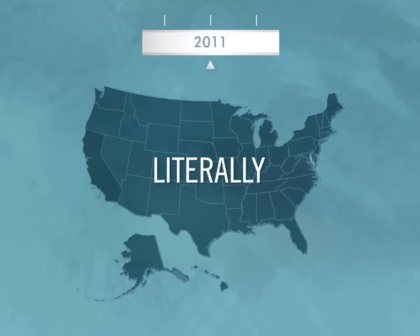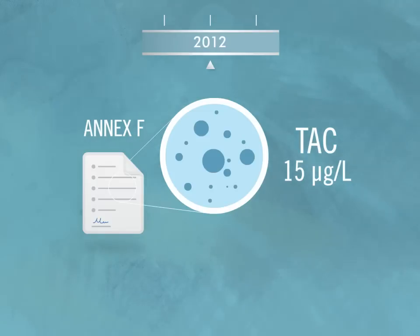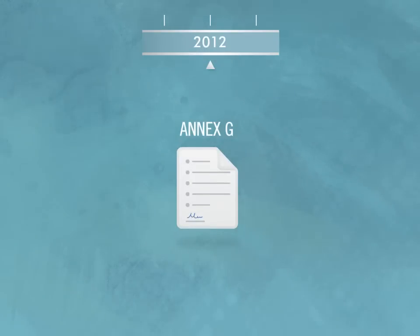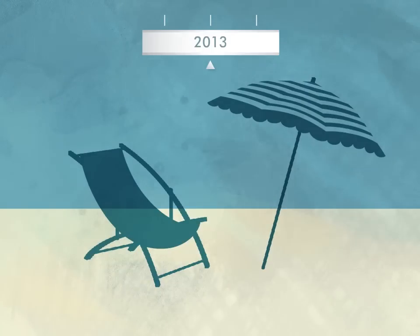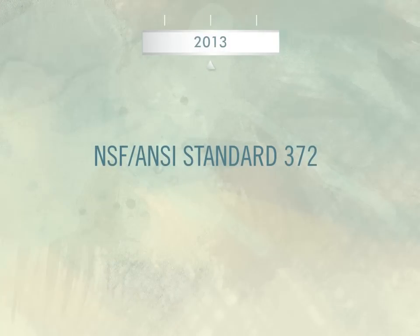Fast forward to July 2012. Remember NSF ANSI 61 Annex F — 15 micrograms per liter TAC for leached lead? Forget it. It's now just 5 micrograms per liter. Hope you're compliant. What about Annex G? In October 2013, it takes an early retirement.